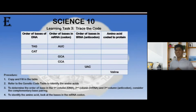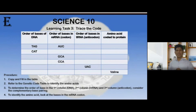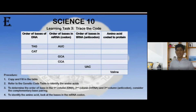On your learning task, you are going to trace the code. Procedure: copy and fill in the table, and refer to the genetic code table to identify the amino acids. To determine the order of bases in the first, second, and third columns, consider the complementary base pairing. To identify the amino acid, look for the base in the mRNA codon.